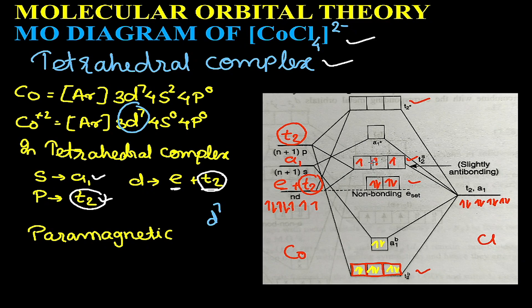As this complex has three unpaired electrons, the magnetic property of this complex will be paramagnetic. The electronic configuration of this complex would be T2 bonding with six electrons, A1 bonding with two electrons, then E